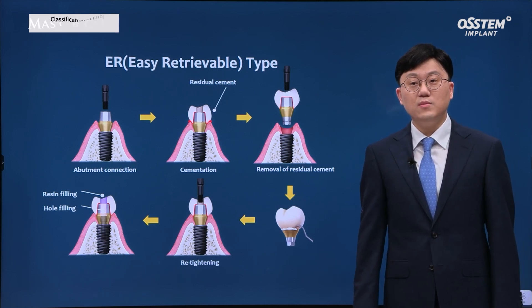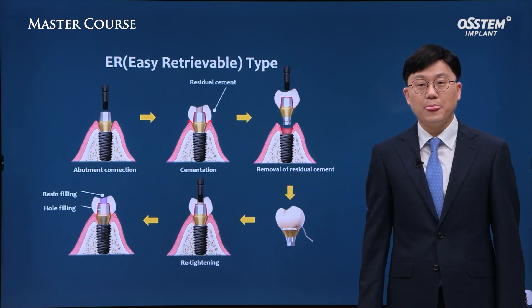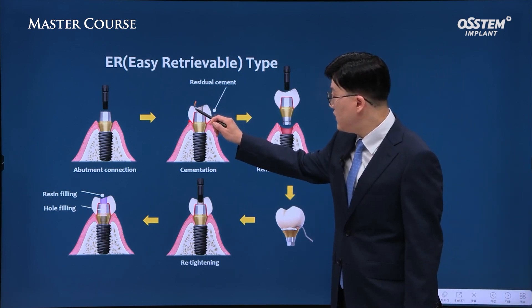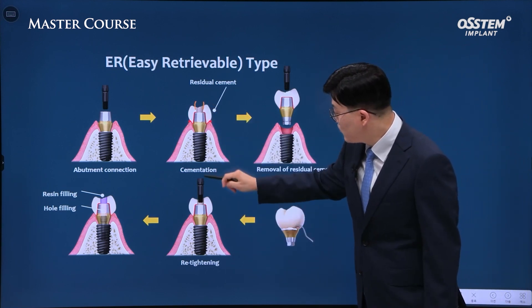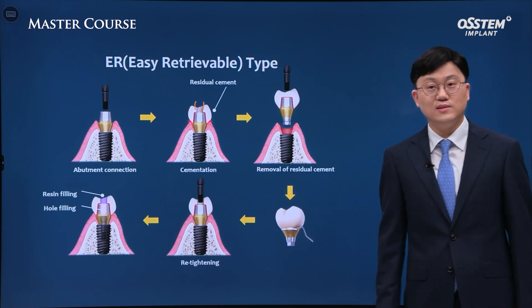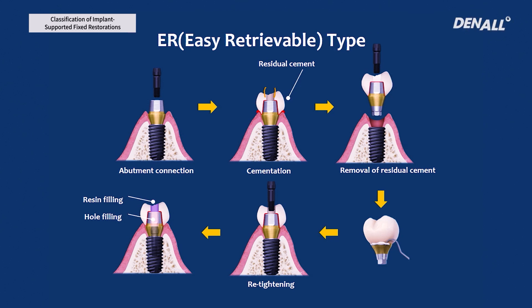ER type is similar to cement type in the sense that the crown is cemented. However, there is a screw hole, and using this screw hole, the screw can be tightened or untightened. Removing residual cement is very important here as well. After applying cement, the screw is loosened. At times, the crown is fully removed and the residual cement is removed thereafter, which is a major advantage. After that, it is adapted and the hole is sealed.